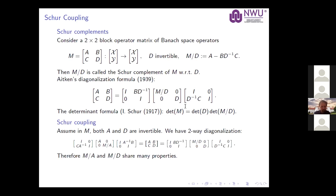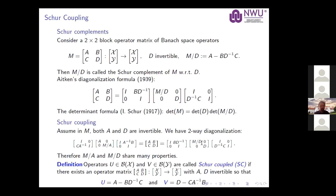Turning to Schur coupling: you have your block matrix M and assume both diagonal blocks A and D are invertible operators. That means you can do two diagonalizations — one way and the other — and the relation between the two Schur complements tells you they have many properties in common. So two Banach space operators U and V are Schur coupled if we can find such a two-by-two block operator matrix with invertible diagonal blocks such that the two Schur complements are U and V.